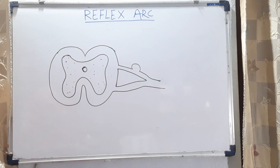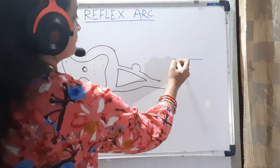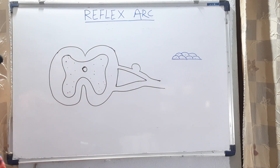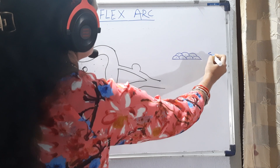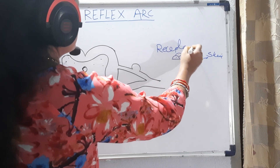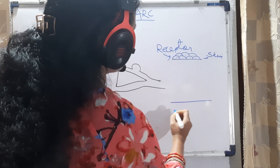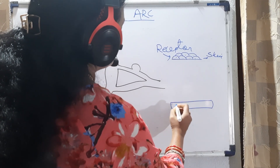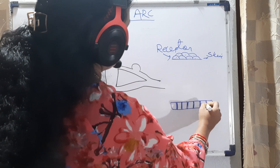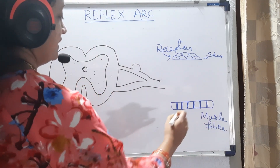Now we will draw the diagram of the receptor and the effector. Receptors are the sense organs, so let us take the example of the skin. The uppermost layer of the skin is the epidermis which contains the epithelial cells. This is the skin, which is the receptor. Now we will draw the effectors. Effectors are the muscles — voluntary muscles which contain the dark bands and the light bands. I have shown the muscle fiber, and this is the effector.